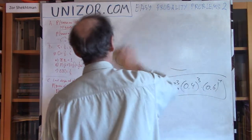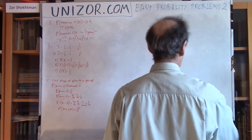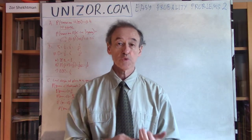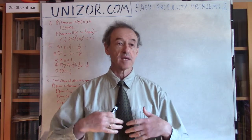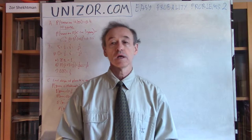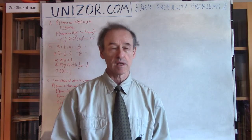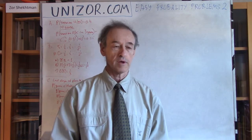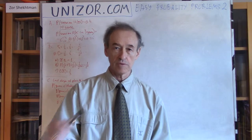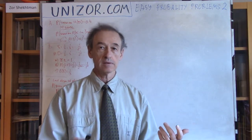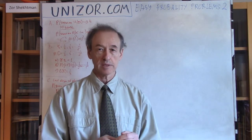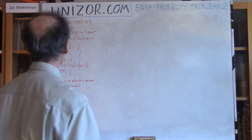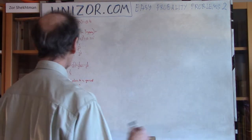Three key decisions were made here. First, we chose which 3 out of 10 years are snowing — hence the combination C(10,3). Second, for those chosen 3 years, the probability of snow is 0.4 in each, and since years are independent, we multiply. Third, the remaining 7 years have probability 0.6 of no snow, so we multiply three 0.4s and seven 0.6s together.